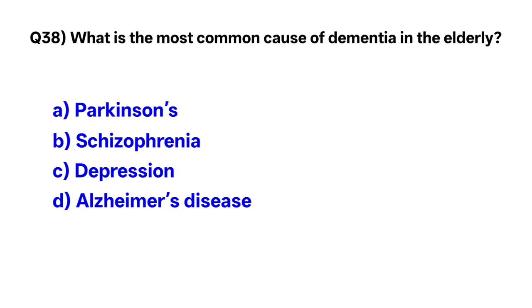Question number thirty-eight: What is the most common cause of dementia in the elderly? The correct option is D, Alzheimer's disease.